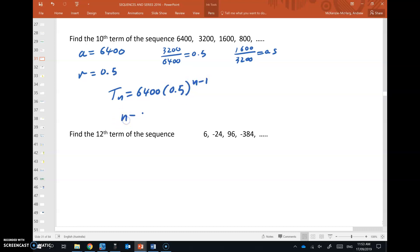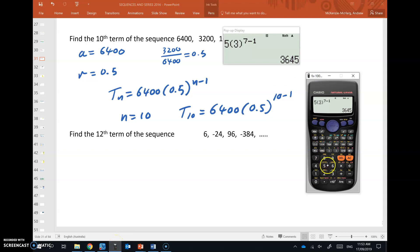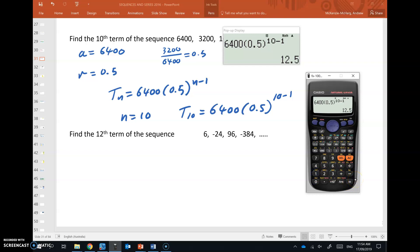So the sequence rule is this. And when n equals 10, t_10 is 6400 by 0.5 to the power of 10 minus 1. Okay, so what do we get when we put that into the calculator?